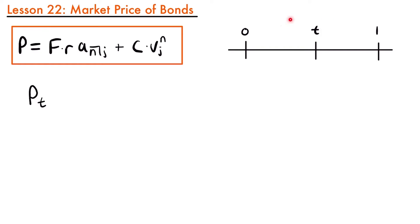If we look at a timeline where we start at some time 0 where a coupon would be paid and then we have some time 1 where a coupon would be paid, then time t would lie somewhere in between those two coupon periods — that would represent the moment in time that the bond would be purchased. P sub 0 is the value of the bond after the last coupon was made, and the price at time equals 1 would be the value of that bond after the next coupon was paid.